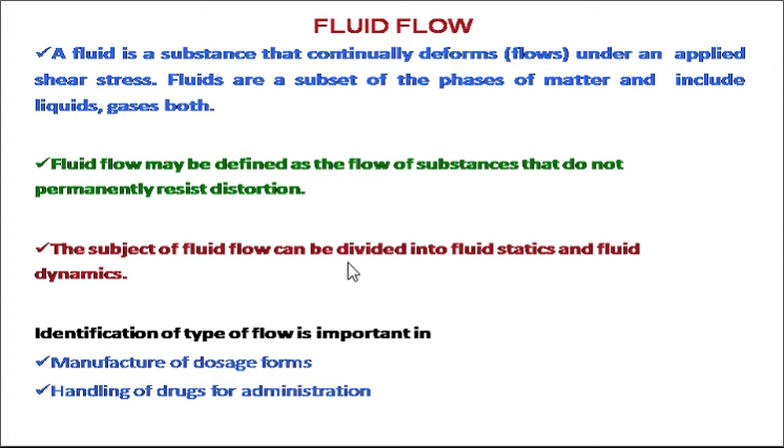Fluid flow is defined as the flow of substances that do not permanently resist distortion. This term is applicable to liquids or gases. In both cases, distortion is not permanent. When given certain devices, the fluid will start flowing. This deals with the flow property of liquids.